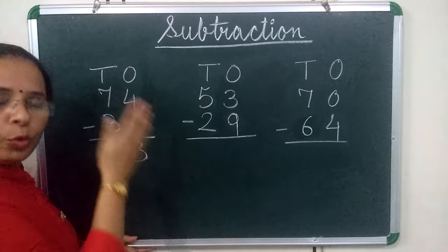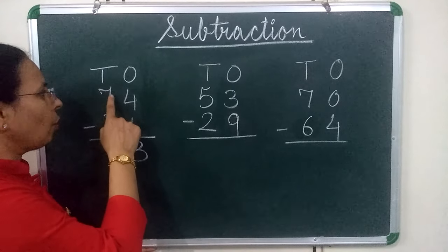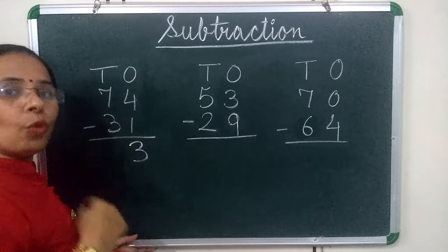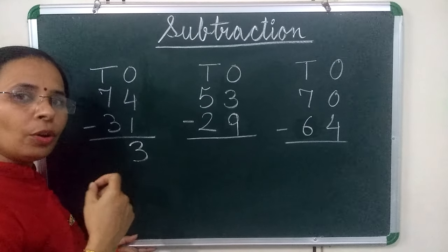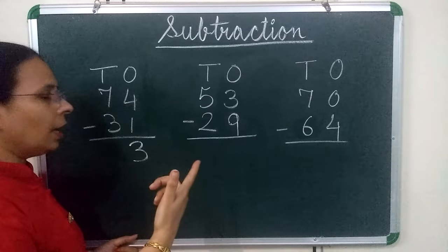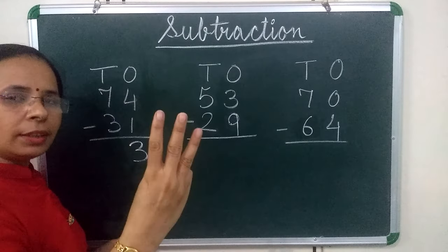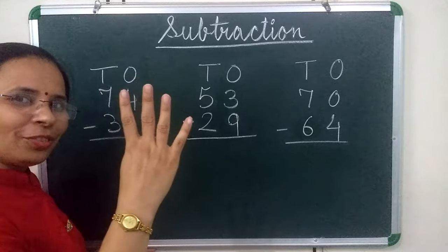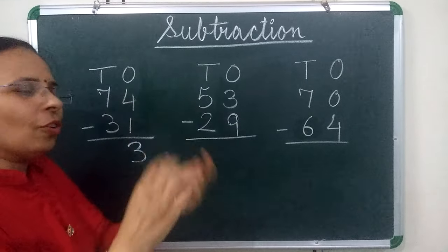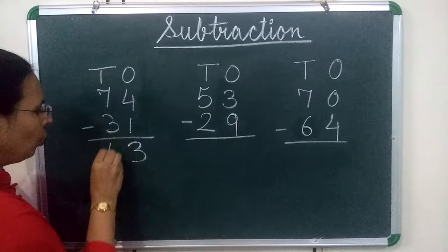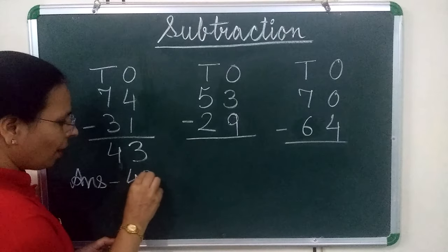Now we will move on to 10th place. We have to subtract 3 from 7. What comes after 3? 4. So we will start counting 4 up till 7. 4, 5, 6, 7. How many fingers are out? 1, 2, 3, 4. So we will write 4 here. Children, 43 is our answer.